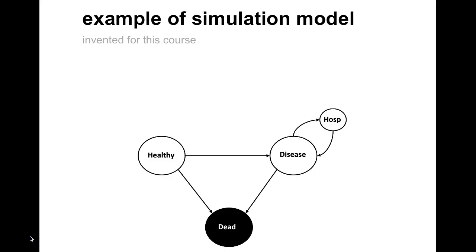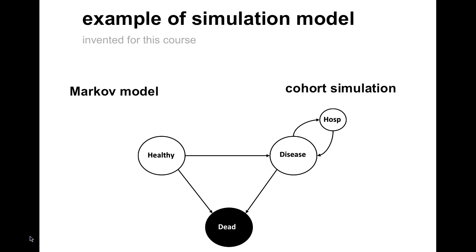The model for this example has the technical term Markov model. That means that the model consists of finite states, and that the simulated individuals during each cycle of the simulation — that is, during each year — have to reside in one of the defined states. The model uses cohort simulation, meaning that a cohort of identical individuals is simulated. The Markov model with cohort simulation is often good enough for cost-effectiveness analysis and is the most commonly used model for this purpose.